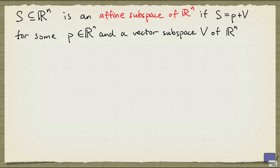A subset S of R^n is said to be an affine subspace of R^n if S can be written as P plus V for some P in R^n and a vector subspace V of R^n.